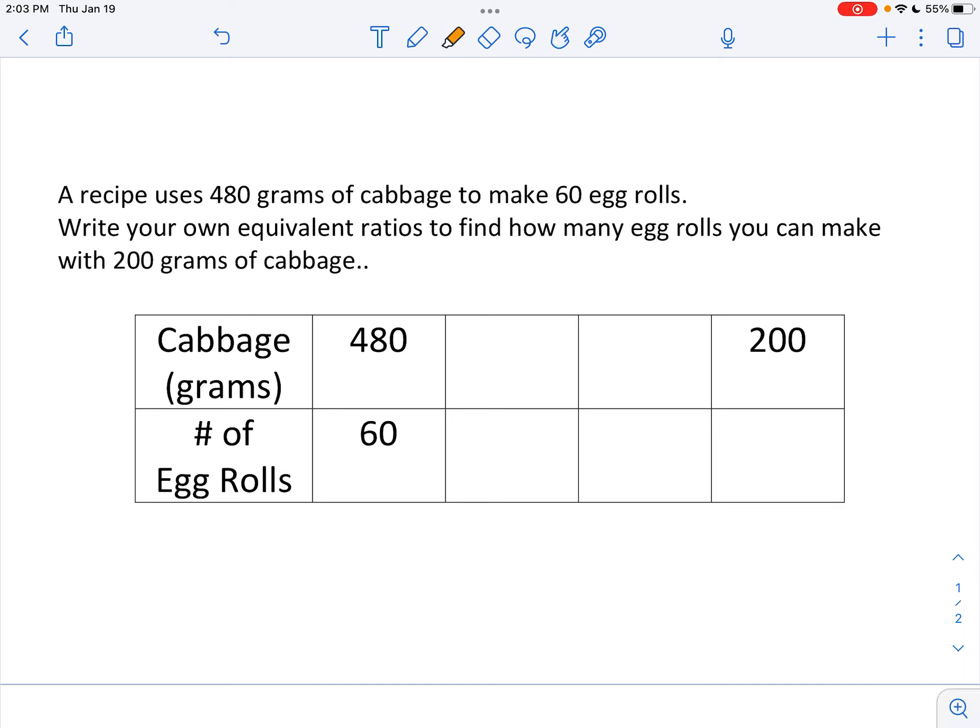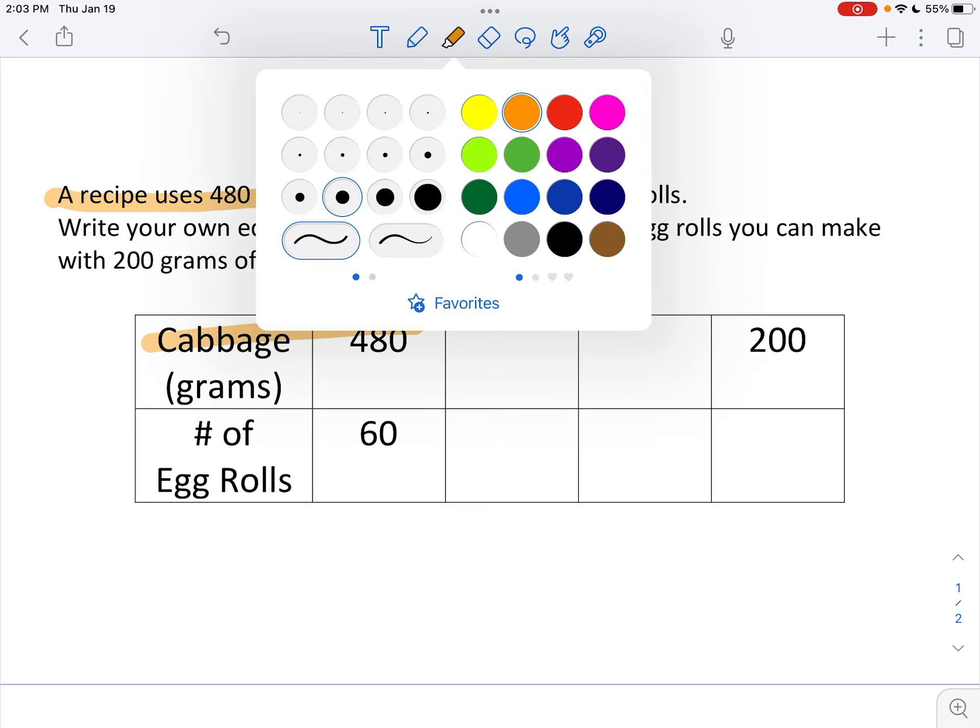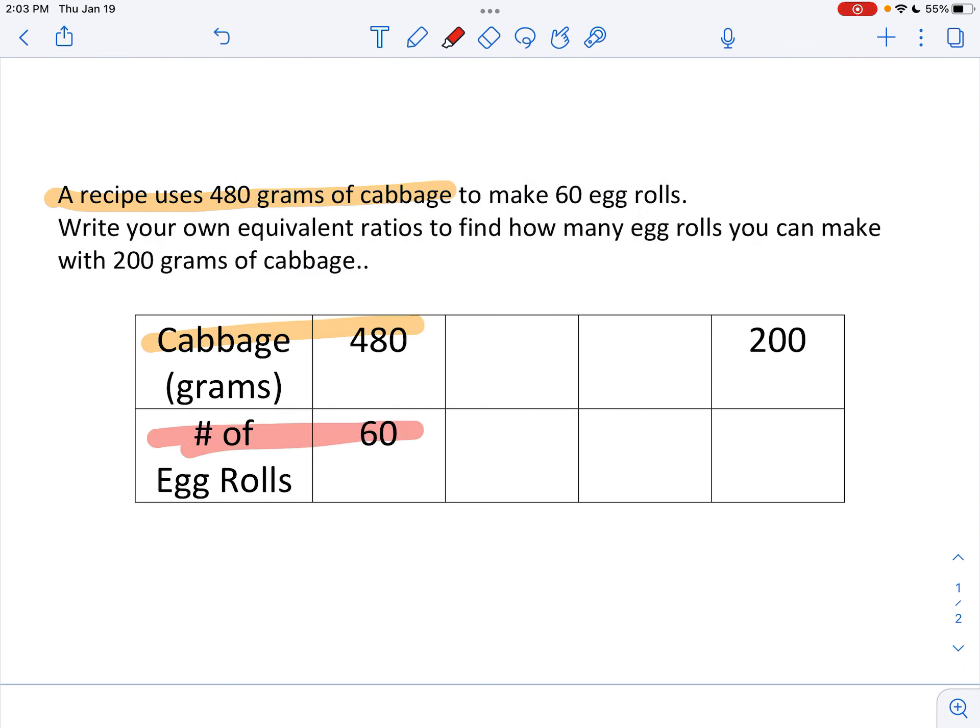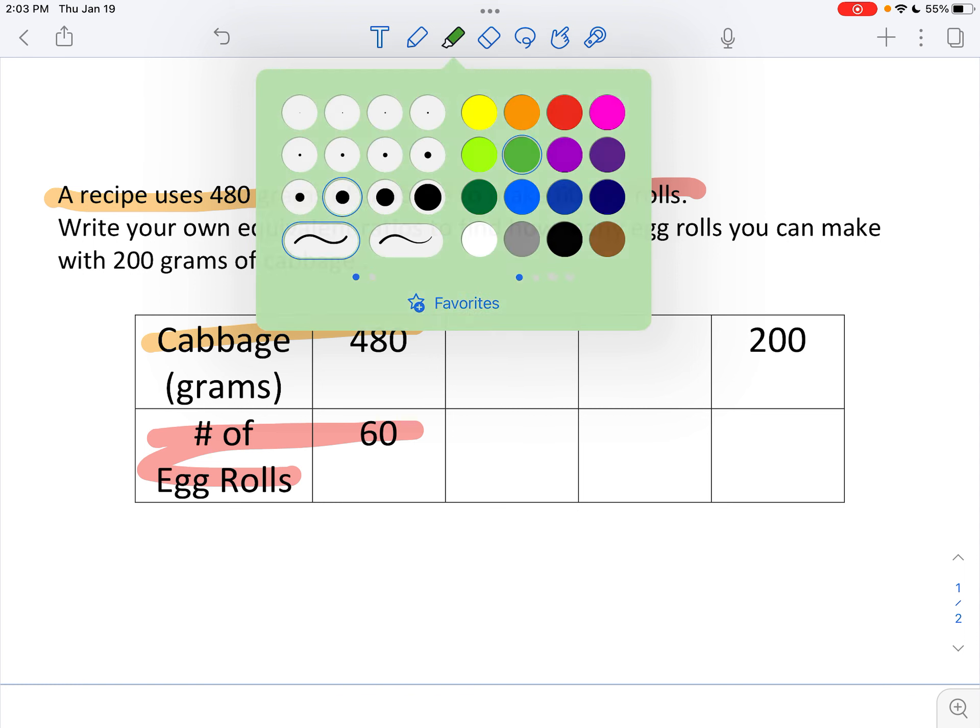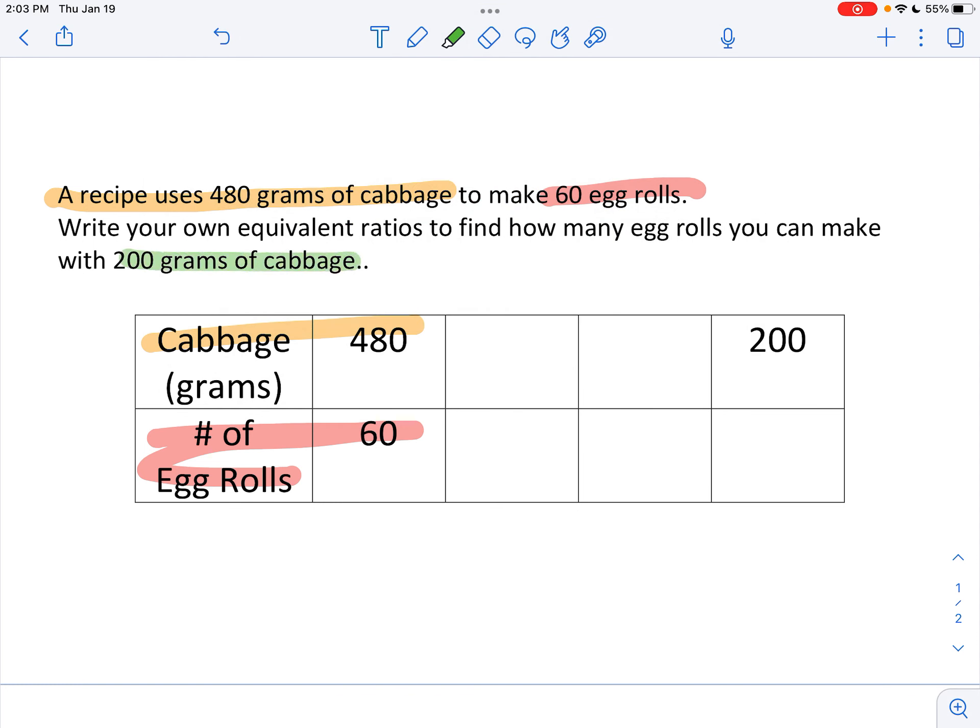It says a recipe uses 480 grams of cabbage, so there's 480 cabbage, to make 60 egg rolls. So there's our 60 egg rolls. Write your own equivalent ratios to find how many egg rolls you can make with 200 grams of cabbage.